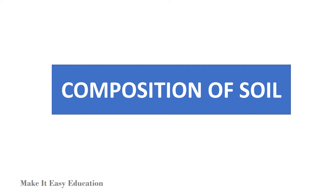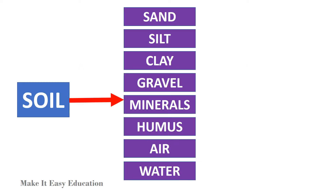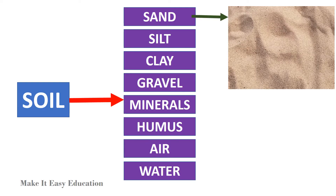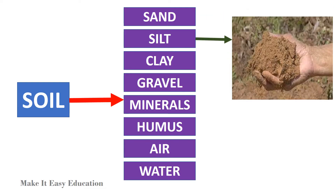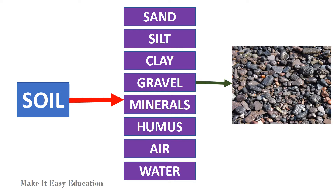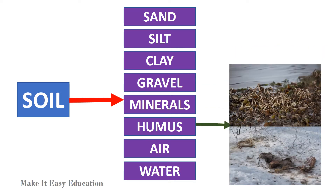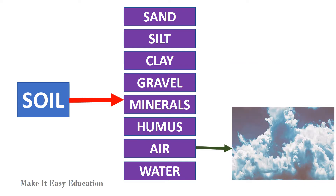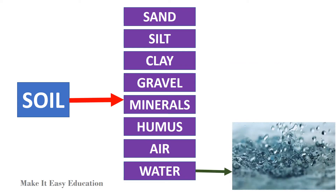Composition of soil. Soil is made up of different types of soil particles. They are sand, silt, clay, gravels, minerals, humus, air, and water.